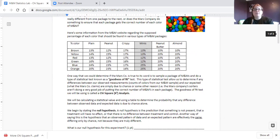So this type of statistical test allows us to determine if any differences between our observed measurements and are expected what Mars company claims are simply due to chance or some other reason. Example, the company's sorters aren't doing a very good job at putting the correct number of M&Ms in each package. The goodness of fit test we will be using is called the chi-square analysis. We will be calculating a statistical value and use a table to determine the probability that any difference between observed data and expected data is due to chance alone. So like we said with the coin flips, it's not necessarily going to be 25-25 even though that's what we expect on average. It could be different.